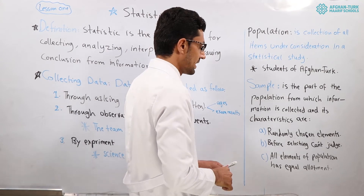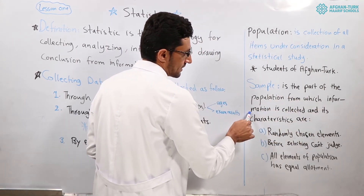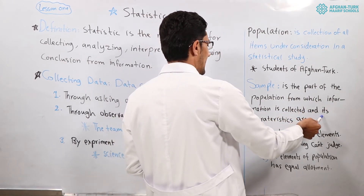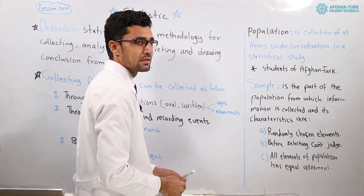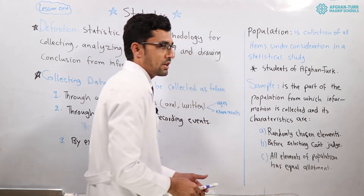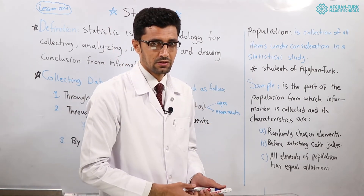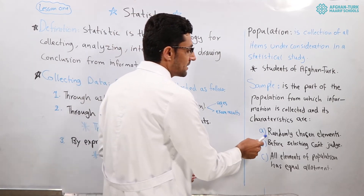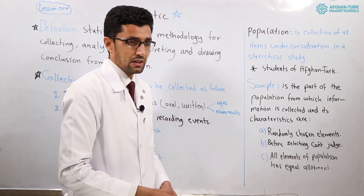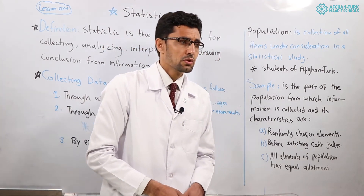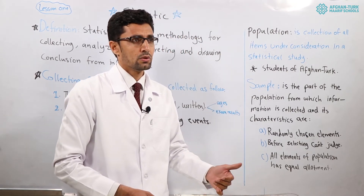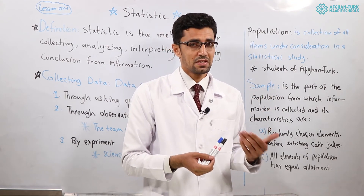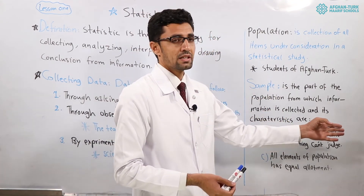Sample is part of the population from which information is collected. Its first characteristic is randomly choosing elements. When you want to have a sample, you have to do it randomly — quickly, without any prior decision.